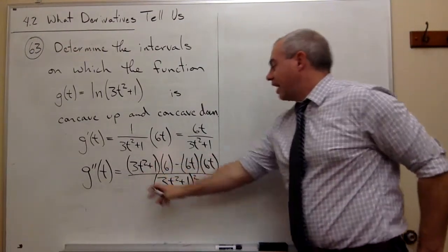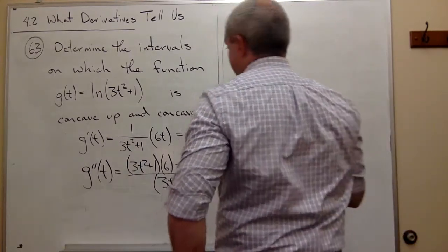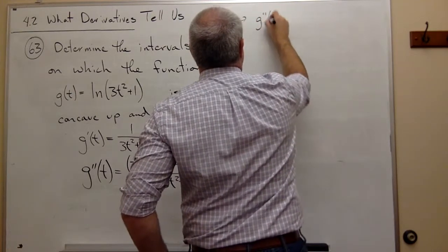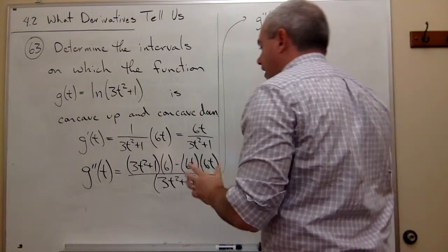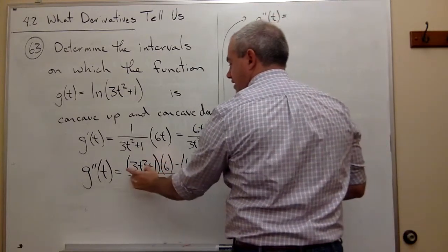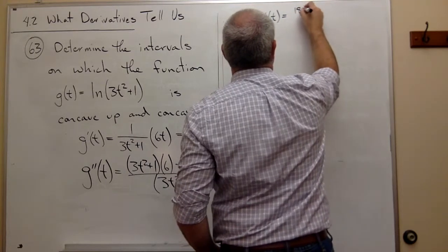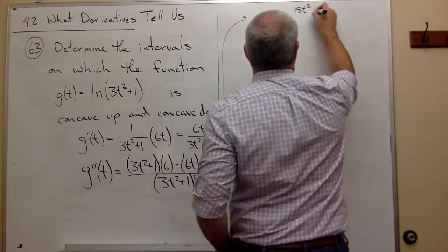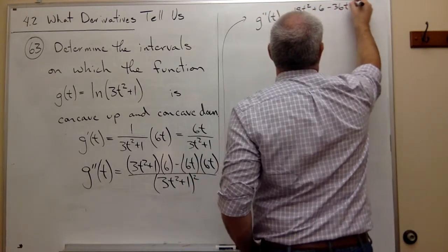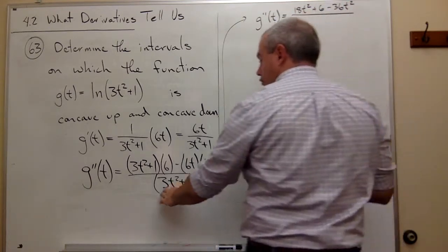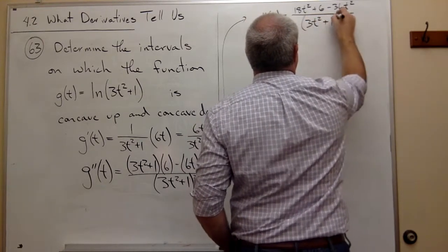This is kind of a mess, so I'd like to clean it up just a little bit. So let's move up here. And we've got that g''(t) is equal to, let's expand this a little bit. It might be easier to work with. So, I've got 6 times 3t², I'm going to distribute the 6, and so I get 18t², plus 6, minus 36t² all over 3t² + 1 squared.